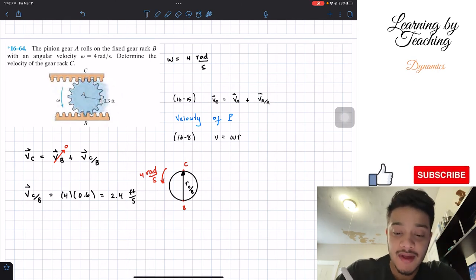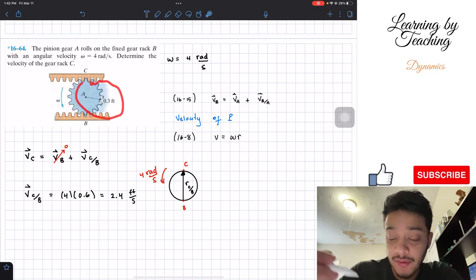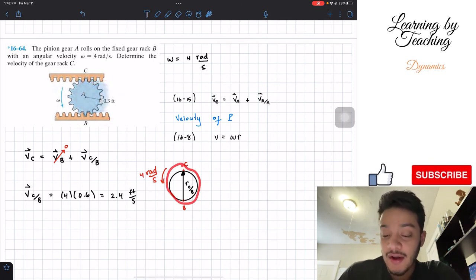One of the questions you may ask is, but the radius is 0.3. This is a diameter.